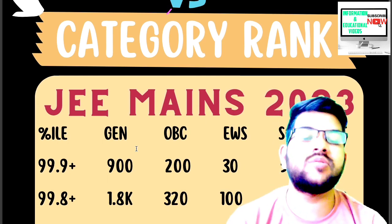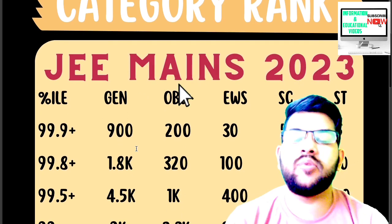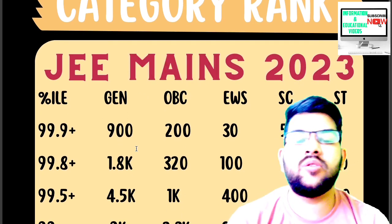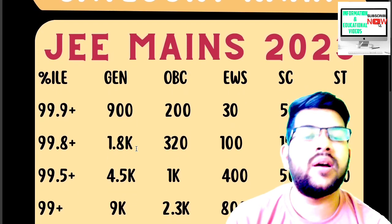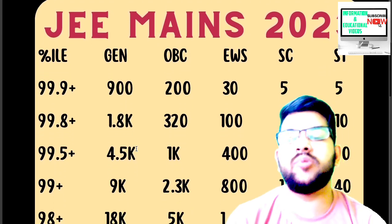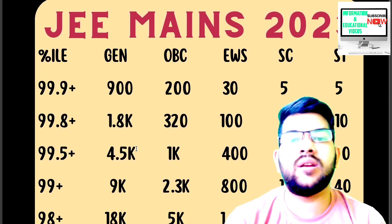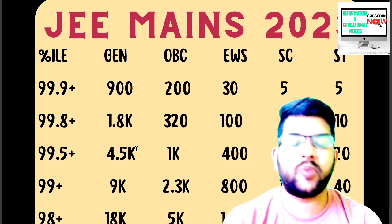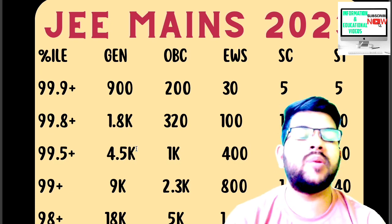For 99.5 plus percentile: general rank around 4,500, OBC 1,000, EWS 400, SC 50, ST 20. For 99 plus percentile: general 9,000, OBC 2,300, EWS 800, SC 140, ST under 40. For 98 plus percentile: general under 18,000, OBC under 5,000, EWS under 1,400, SC under 280, ST under 80.